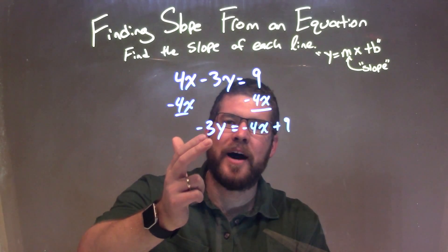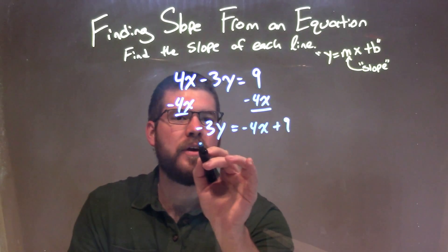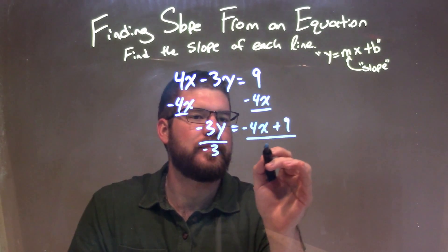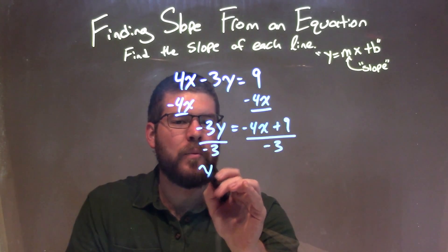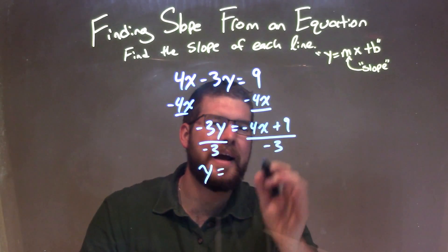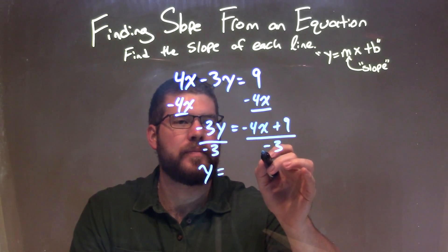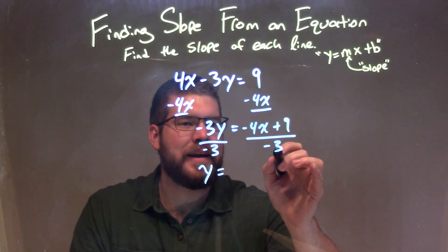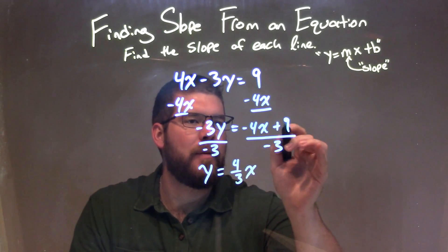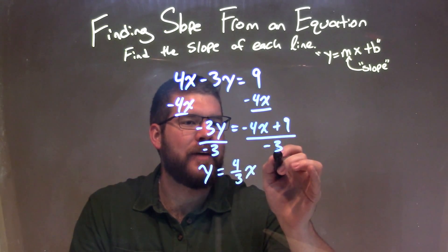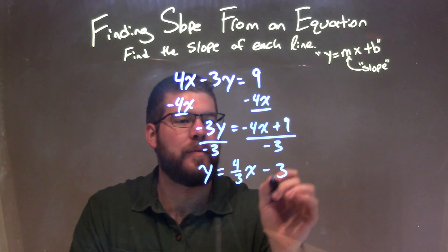So now I need to divide by negative 3 on both sides to get y by itself. We divide by negative 3, leaving y by itself on the left. On the right, I need to distribute that negative 3 to both parts. Negative 4x divided by negative 3 is a positive 4 thirds x, and 9 divided by negative 3 is negative 3, so we have minus 3 there.